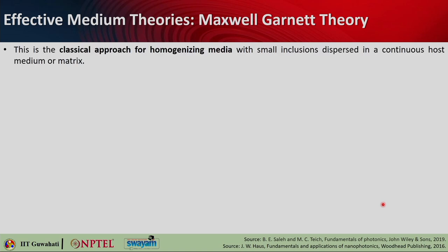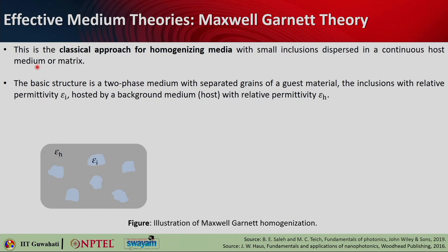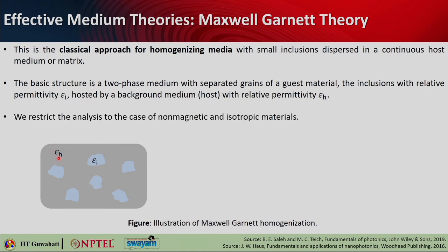Now let us look into one of the most popular effective medium theories, which is called Maxwell-Garnett theory. This is the classical approach for homogenizing media which has got small inclusions dispersed in a continuous medium or matrix. The basic structure is a two-phase medium with separated grains of the guest material with permittivity epsilon_i, while the host medium has permittivity epsilon_h. Maxwell-Garnett theory helps us find the effective permittivity of this system.